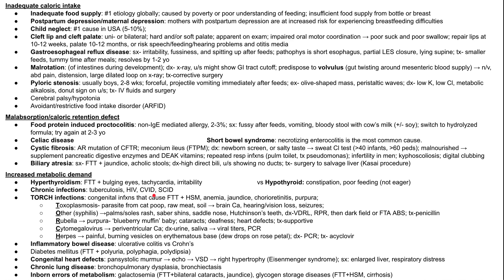We should also discuss TORCH infections — congenital infections that can cause failure to thrive, as well as anemia, jaundice, hepatosplenomegaly, chorioretinitis, and purpura. There are five of these infections.